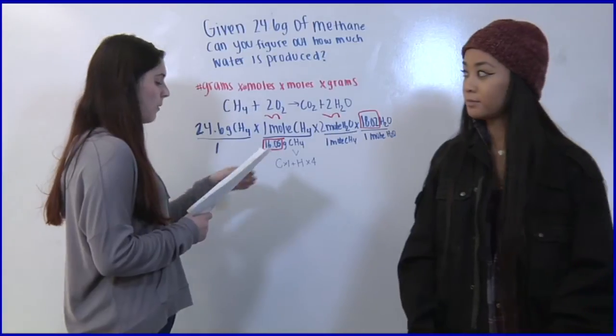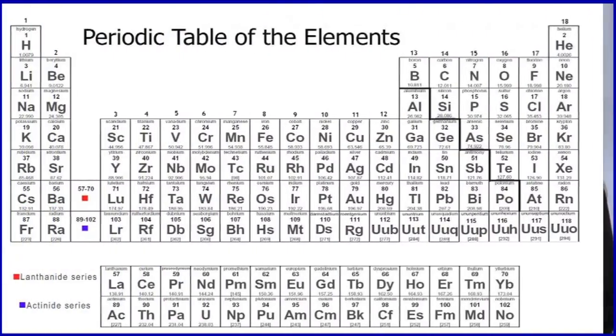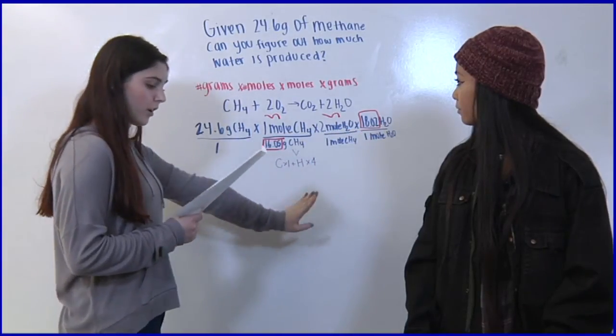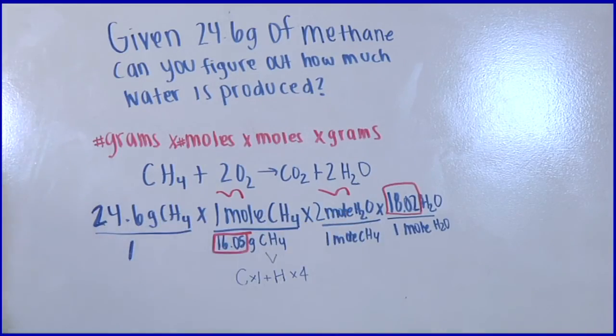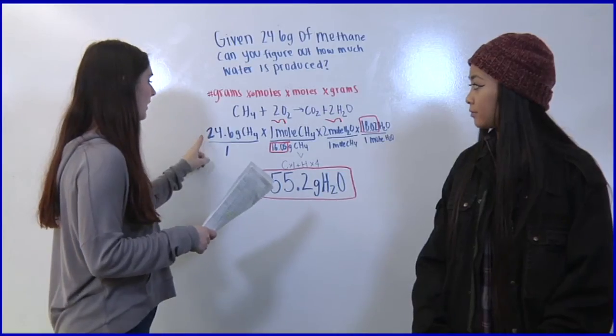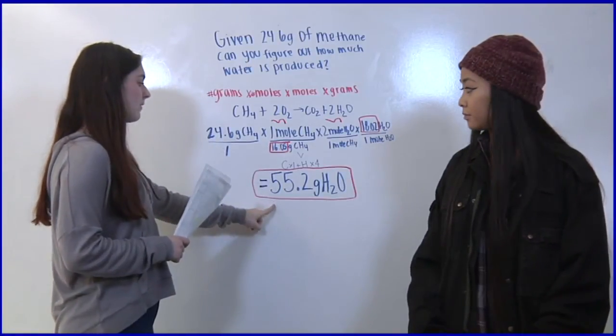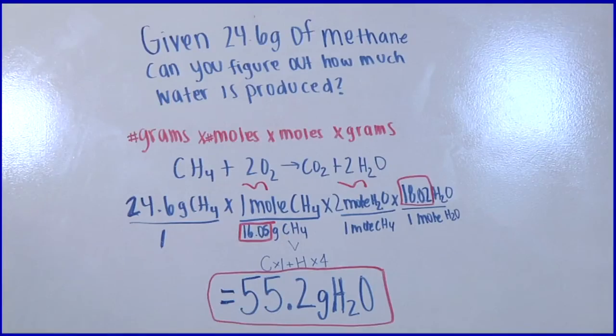Now we go back to grams and look on the periodic table for the atomic mass of H2O like we did before. And then we're going to add them up to get 18.02. We put that over 1. And then we're going to times the top line and divide the bottom line to solve the problem. And we get 55.2 grams of H2O once every element is cancelled out.